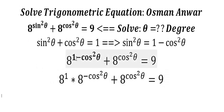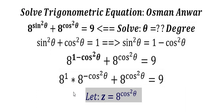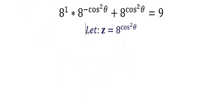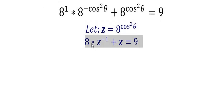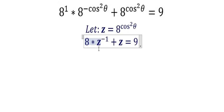We can split this as 8 to the power of 1 times 8 to the power of minus cosine squared theta, plus 8 to the power of cosine squared theta, equals 9. Now let's introduce a new variable z, where z equals 8 to the power of cosine squared theta. That means 8 times 8 to the power of minus cosine squared theta is 8 times z to the minus 1, and 8 to the power of cosine squared theta is just z, so: 8·z⁻¹ + z = 9.